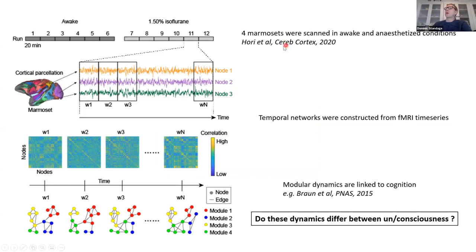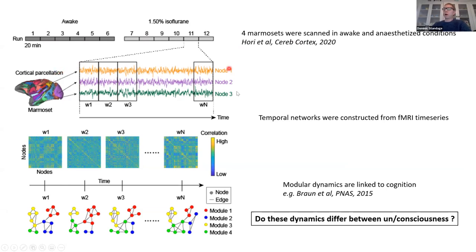In this study, four marmosets — little New World monkeys — were put in an MRI scanner in two conditions: when they were awake and when they were under the influence of the anesthetic isoflurane. In each condition, they were scanned six times, for 20 minutes each. The rough overview of the methodology is we have 116 cortical regions that we're recording from, and we construct brain networks in one-minute time windows — w1, w2, w3, and so forth.